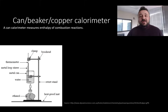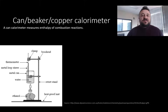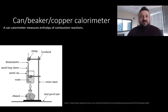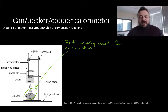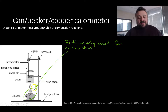One of the really early types of calorimeters you'll use is the canned beaker or copper calorimeter. A canned calorimeter is used to measure the enthalpy change of combustion reactions in particular, but you can also use it to measure dissolution reactions and so forth. It's particularly used for combustion, and that's because the chemical reaction we're measuring the energy change for is happening externally.